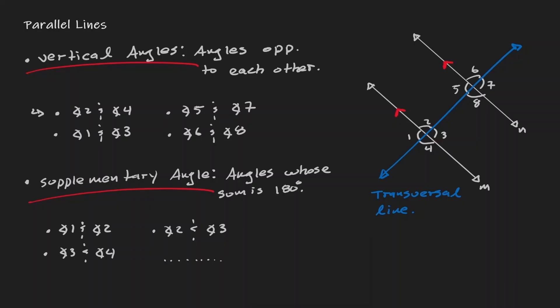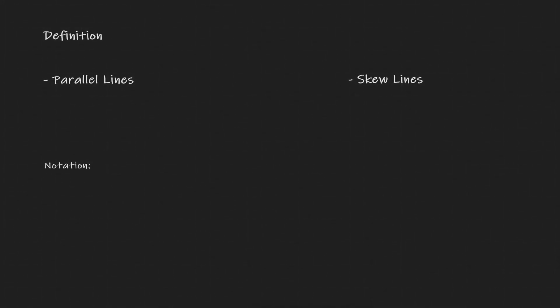In our next lesson, we will discuss what properties these angles have. But as of right now, since it's an introduction lesson, all we want to do is identify them. Now that we have this scenario covered, let's backtrack and go back to how to properly define parallel lines. Let's look at a definition. There are two words we will be defining here: parallel lines and skew lines.